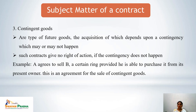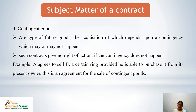The third type of goods is contingent goods — a type of future goods, the acquisition of which depends upon a contingency which may or may not happen. Such contracts give no right of action if the contingency does not happen. For example, A agrees to sell B a certain ring provided he is able to purchase it from its present owner. The availability of the ring depends upon a contingency — if the contingency happens, there would be a contract; otherwise this is an agreement for the sale of contingent goods.